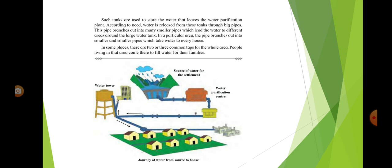Such tanks are used to store the water that leaves the water purification plant. According to need, water is released from these tanks through big pipes. This pipe branches out into many smaller pipes which lead the water to different areas around the large water tank.